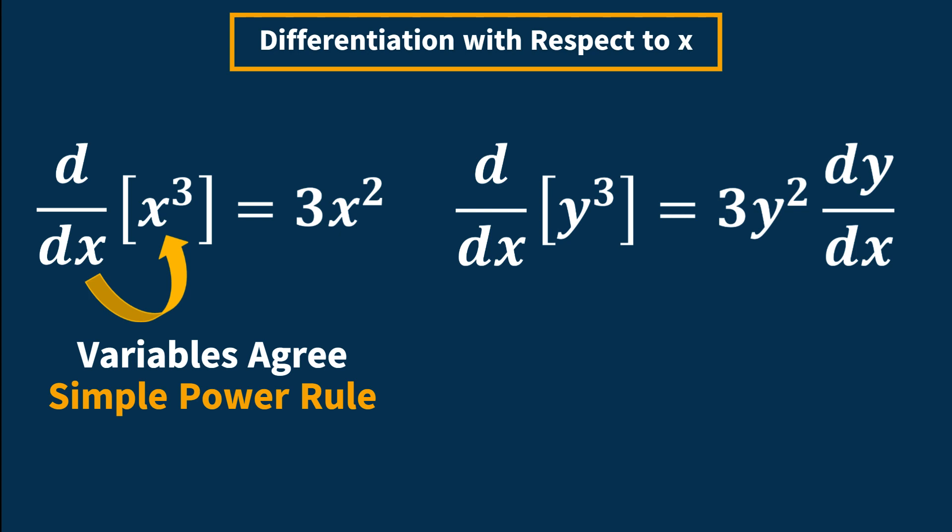The second equation is the derivative with respect to x of y cubed. The variables here disagree. That means we must solve the equation using the chain rule. We proceed as normal. However, we must include the dy by dx term after the differentiation.